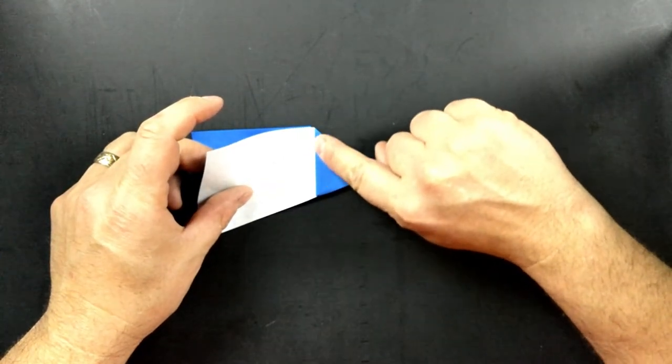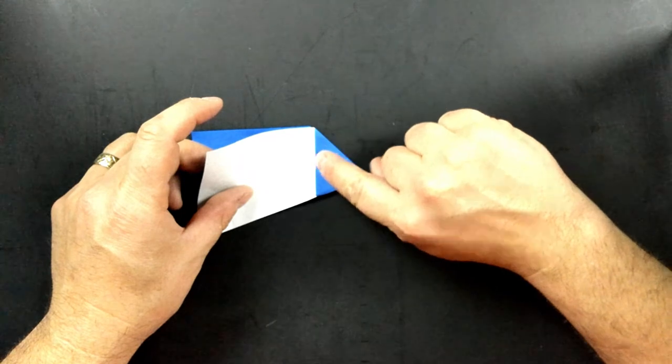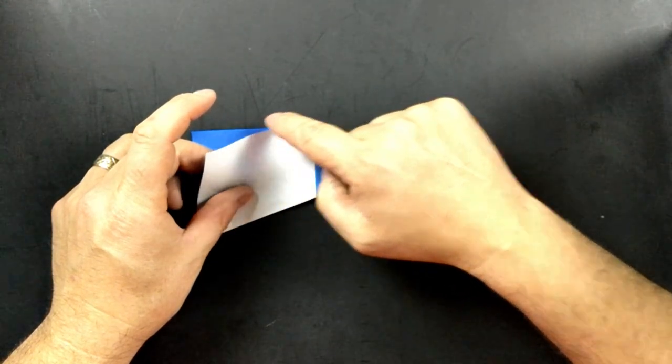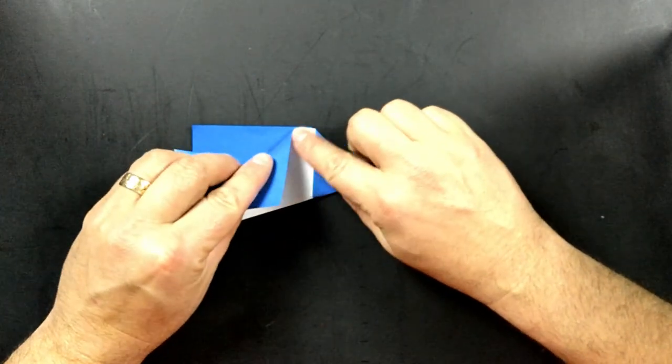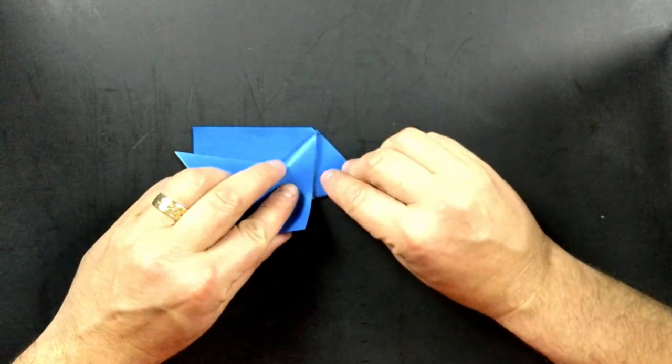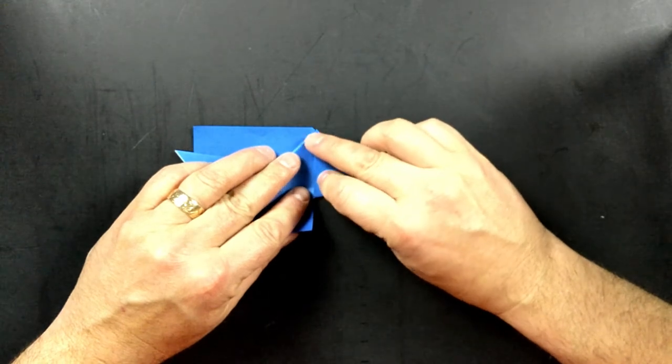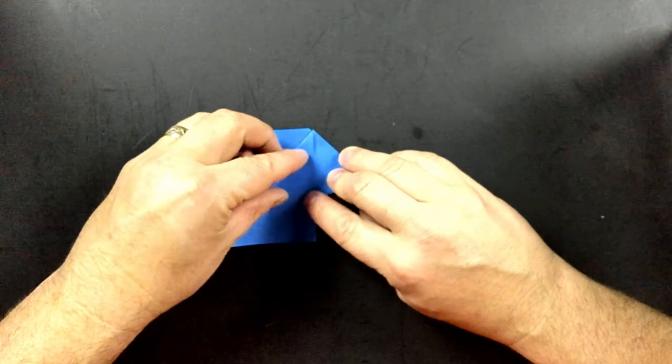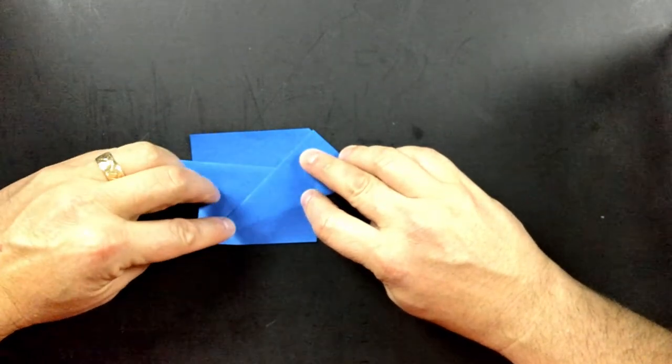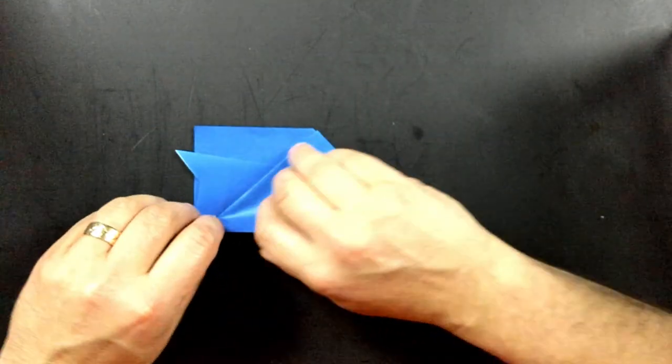If you think of this edge right here and this edge of the paper, if you think of those two matching up, it makes it a lot easier. So you just bring her down, line it up, and get it as close as you can. Go ahead and fold all the way down to the back end.